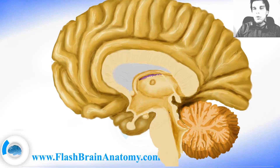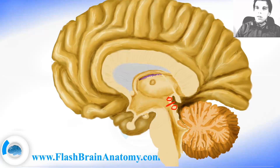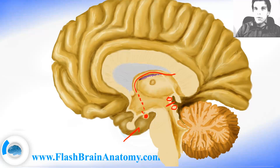The border between the diencephalon and the mesencephalon is right here, between the posterior commissure and the superior colliculi. And on the basal side of the brain, the border is the mammillary body. The nerve fibers coming from the hippocampus go through the fornix, go inside the fornix, go to the mammillary body, and then from the mammillary body they go to the thalamus.